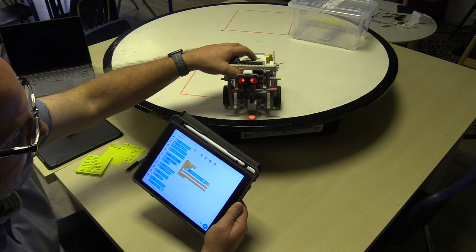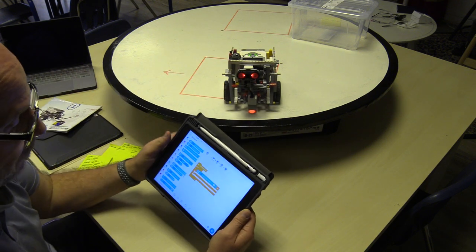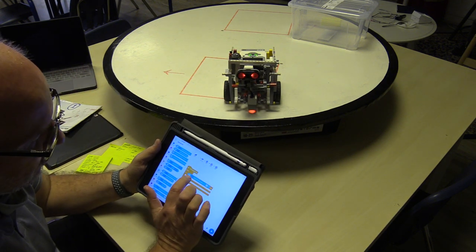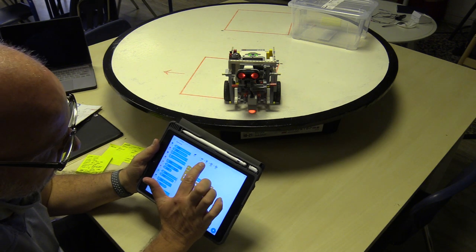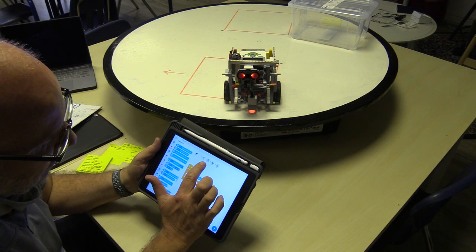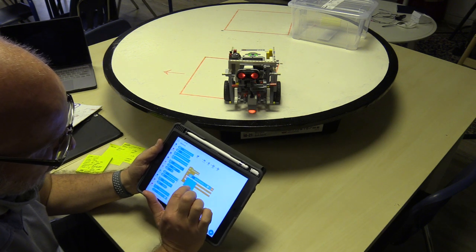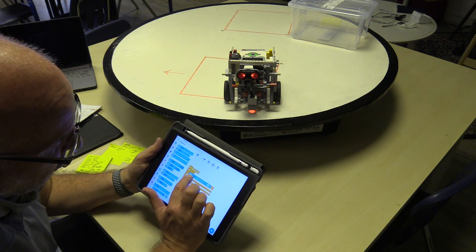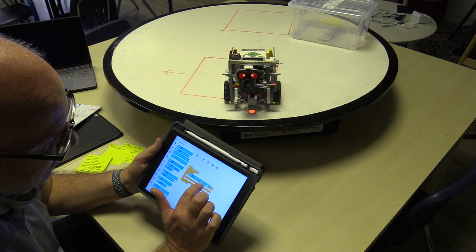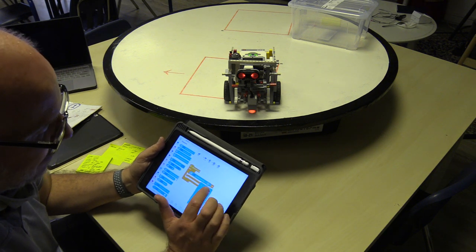First of all, I need to change it from port three. I can see that my color sensor is actually port four, so this would be incorrect programming. I've got to tell it no, port four is reflected light intensity.